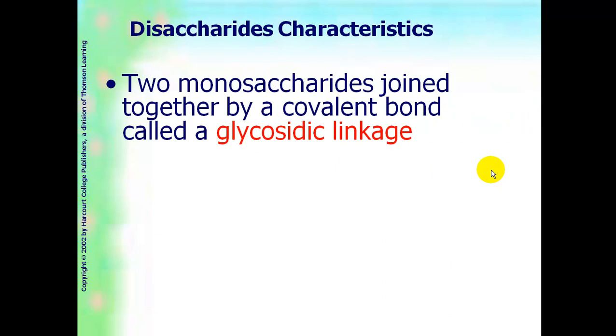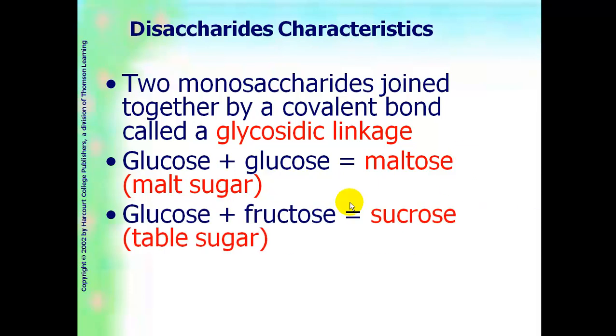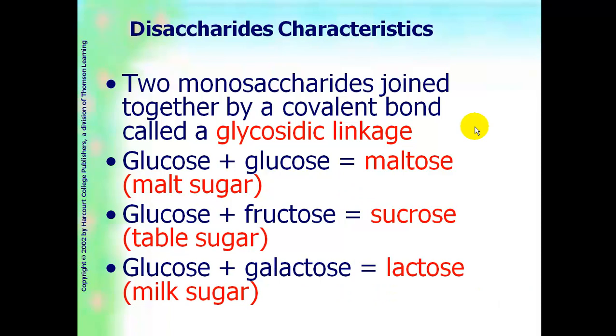Moving on to disaccharides. Remember, a disaccharide is two monosaccharides joined together by a covalent bond. The bond that forms them together has a special name. It's called a glycosidic linkage. There are three main disaccharides for you to be familiar with and what they're made up of. Glucose plus a glucose is maltose. And that's the sugar that's in malt beverages. Glucose plus fructose is sucrose. And that's table sugar. And then glucose plus galactose is lactose. And that's the sugar in milk. So each one of these are all monosaccharides. You put two of them together, we get a disaccharide. The bond between these is called a glycosidic linkage.